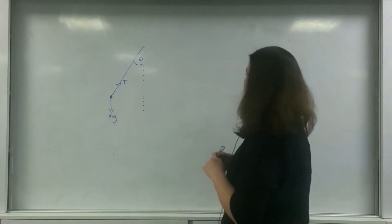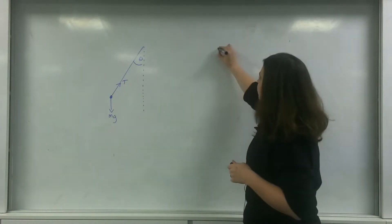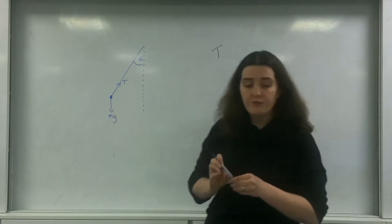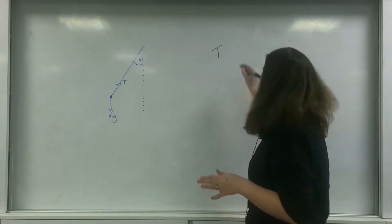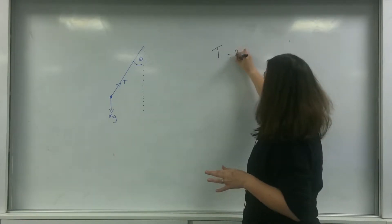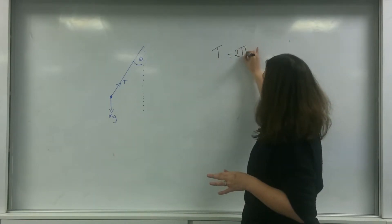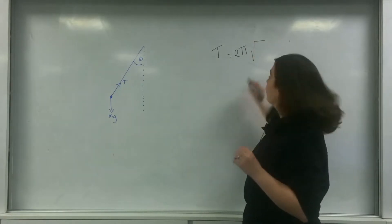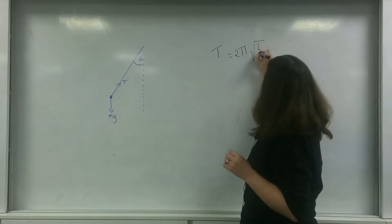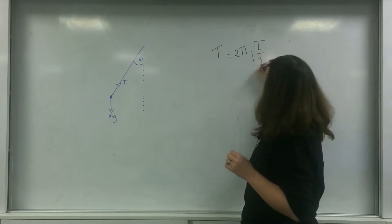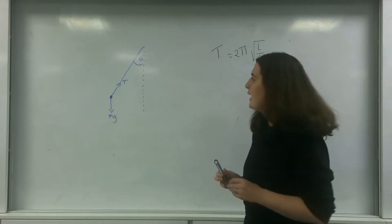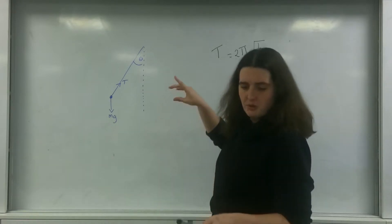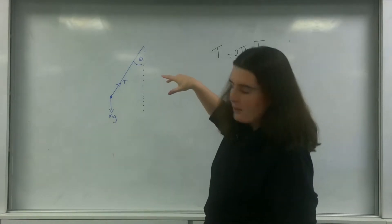The formula I'm going to derive for you today is the time period of the oscillation of the pendulum: T equals 2π times the square root of the length over g, which is 9.81. I'm going to talk you through what's happening here.